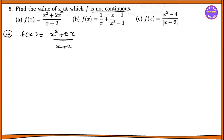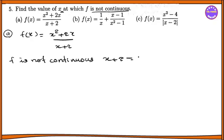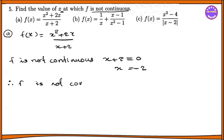F is not continuous. So x plus 2 equals 0, meaning x is not continuous at that point. So x equals minus 2. So x minus 2 is continuous.